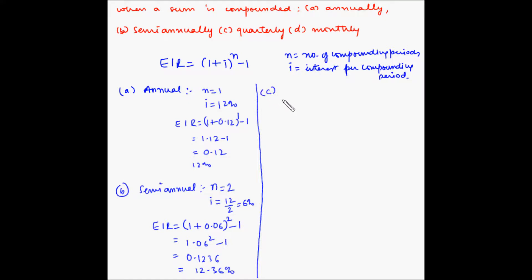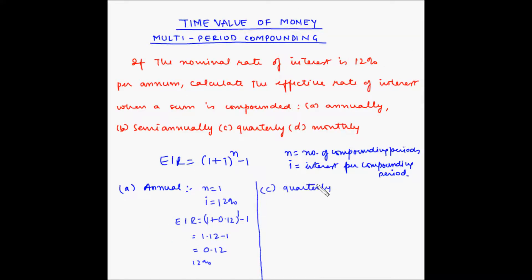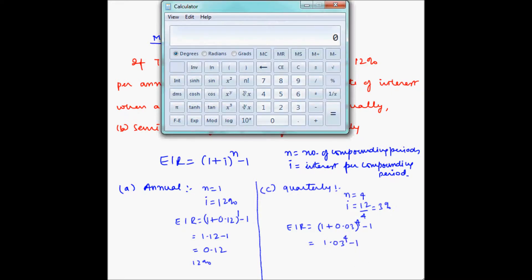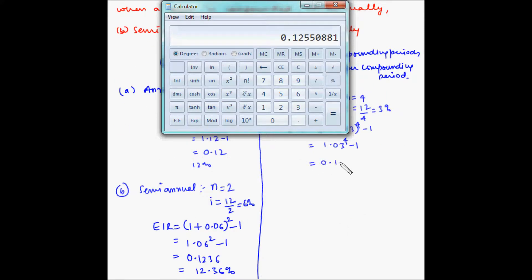In the case of quarterly compounding, the number of compounding periods becomes 4 and the rate of interest becomes 12 ÷ 4 = 3%. So the effective interest rate equals (1 + 0.03)^4 − 1 = 1.03 to the power 4 − 1 = 0.1255, which is 12.55%.